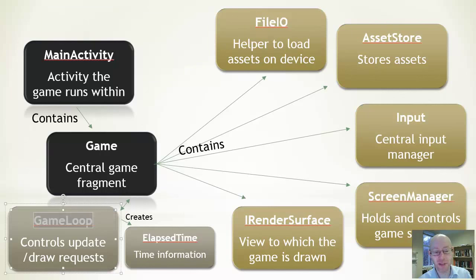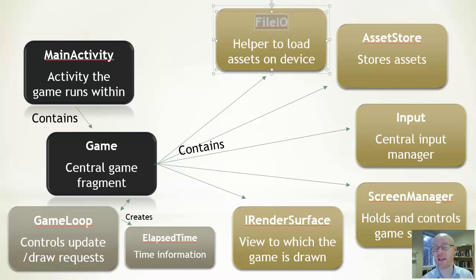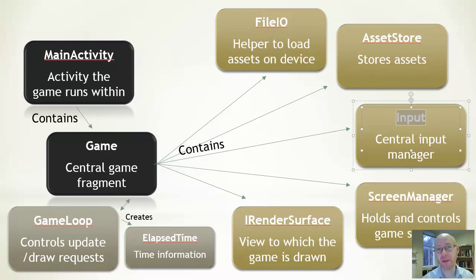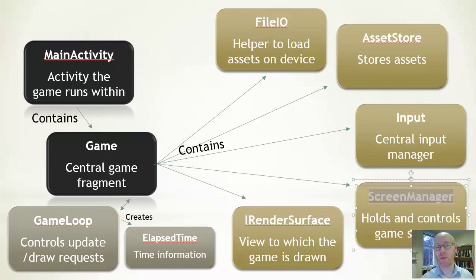Those subsystems include the game loop, which gives us an update and draw tick at a regular interval. Alongside that, there's a file IO manager for loading things in, and an asset store for sharing loaded assets across different game objects. There's an input manager for touch events or accelerometer input, and a screen manager for different screens like the menu screen, level one, or options screen.